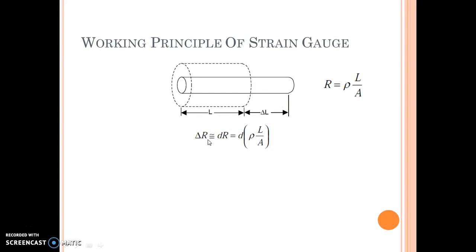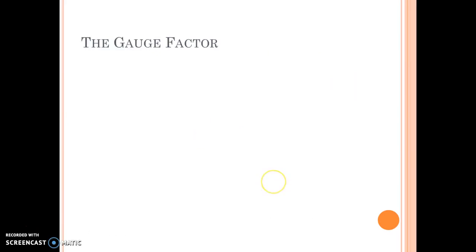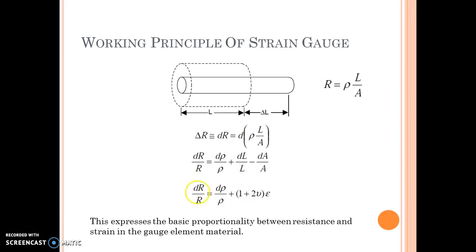Simplifying further, we get this. And ultimately, delta R by R equals d rho by rho plus 1 plus 2 mu into strain. This expresses the basic proportionality between resistance and strain in the gauge element material. So we can see how much strain we have applied, and that much change in resistance per original resistance we get.